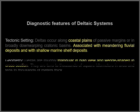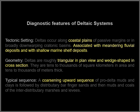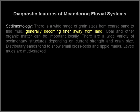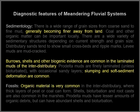The diagnostic features of deltaic systems are as follows: they are associated with coastal plains, meandering fluvial deposits, and shallow marine shelf deposits. Geometry is triangular in plan view with a wedge shape in cross section. The typical sequence is a coarsening-upward sequence. In terms of sedimentology, grain size becomes finer away from the land. Burrows, shells, and other biogenic evidence are common in the laminated muds of the interdistributary. Slumping and soft-sediment deformation are common as well. Fossils and organic materials are very common, especially in the interdistributary where thick layers of coal and peat can form. Shells, bioturbation, and root casts are also common in marshes.